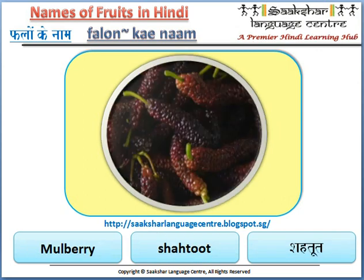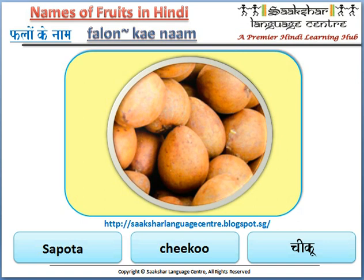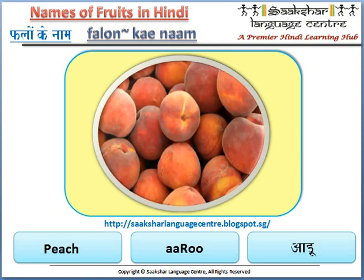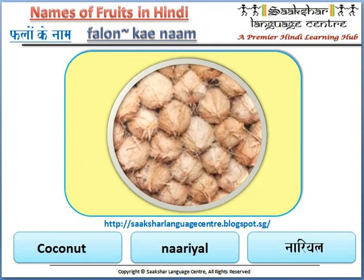Mulberry is shahtoot. Sapota is chiku. Dates is khajoor. Peach is aadu. Coconut is narial.